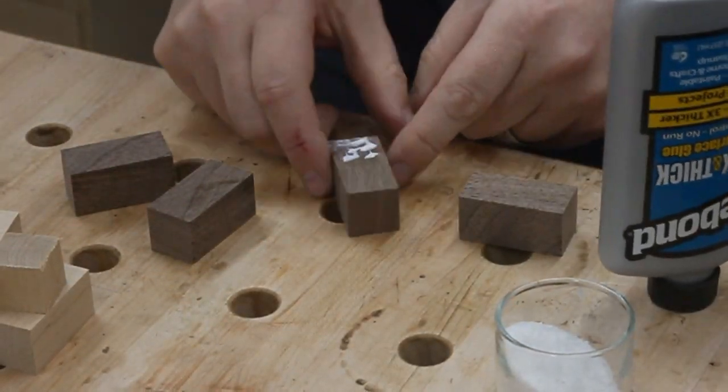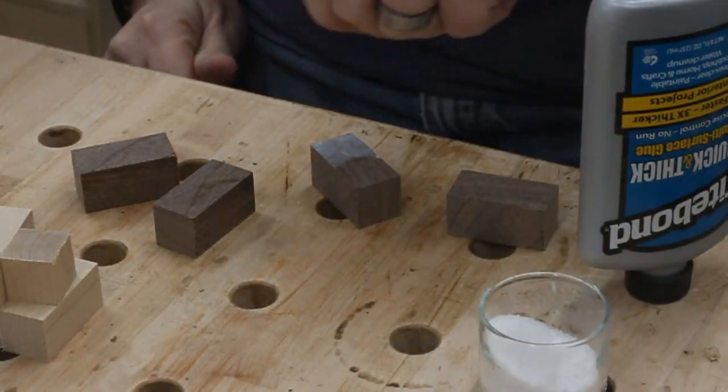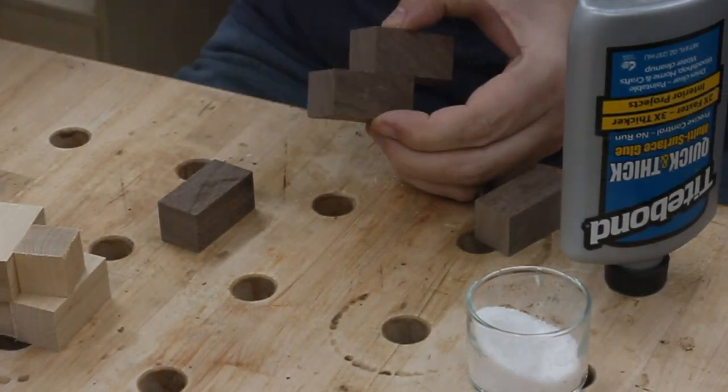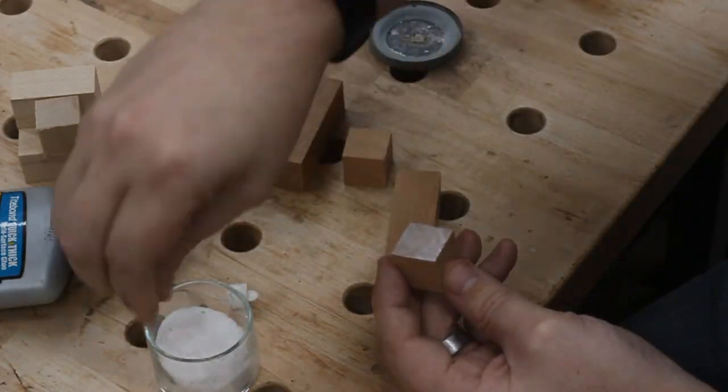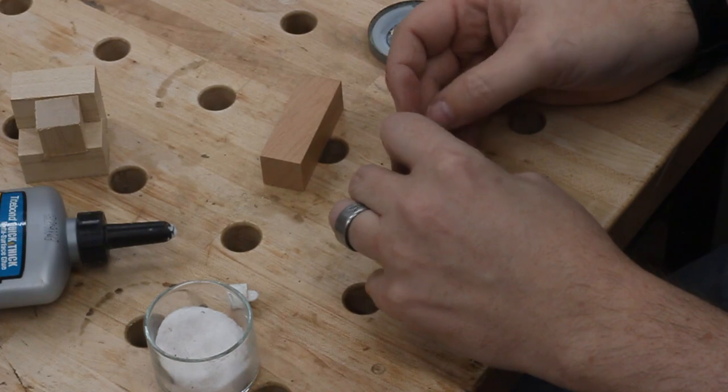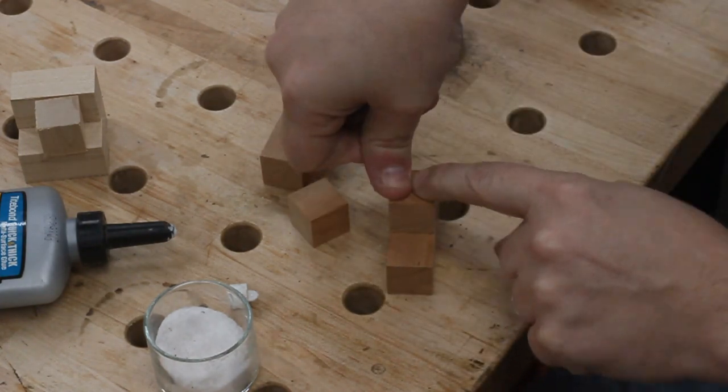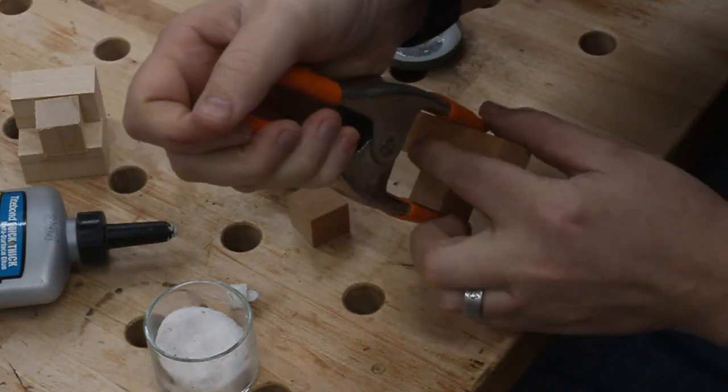And now I could start to glue them together. I was going for some very specific shapes here, so I had to be careful and as precise as I could. I often used some of the pieces as spacers to make sure I was gluing things together in the right spot. And I also sprinkled some table salt on them to keep them from sliding around once I put the clamps on. It may sound weird, but it really works well. Plus, it makes the glue delicious.